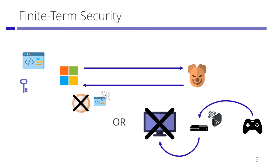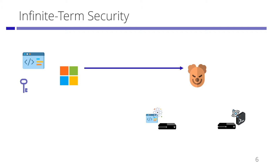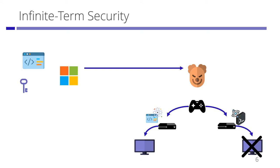Here, the adversary is forced to run the software by an honest evaluation algorithm. The other notion is infinite-term security, which is stronger than finite-term security. In this security game, the adversary also tries to generate possibly entangled bipartite states, and tries to use both states to run the leased software on the legitimate platform. Infinite-term security guarantees the adversary cannot use either of the two states to run the leased software.